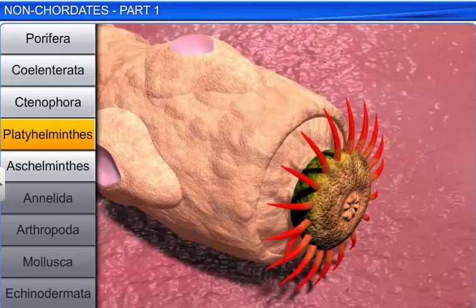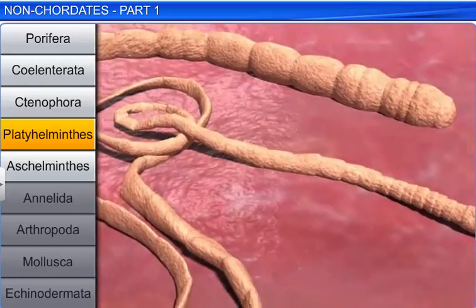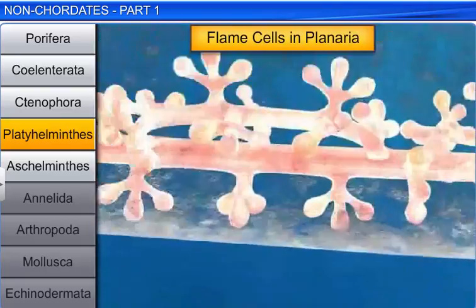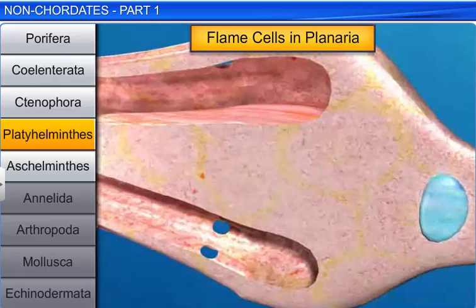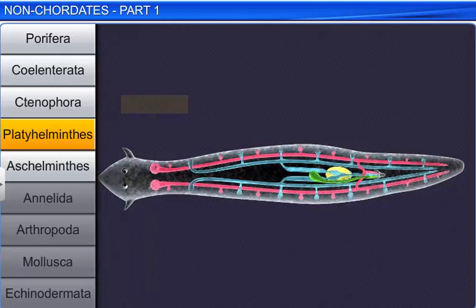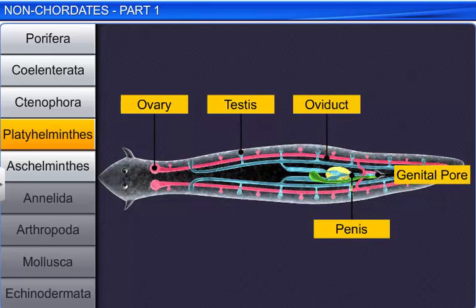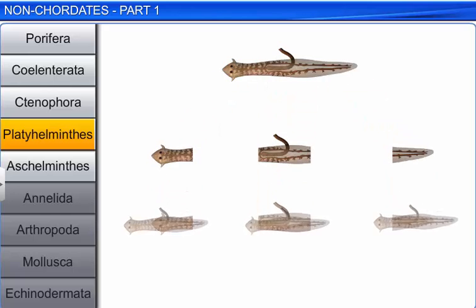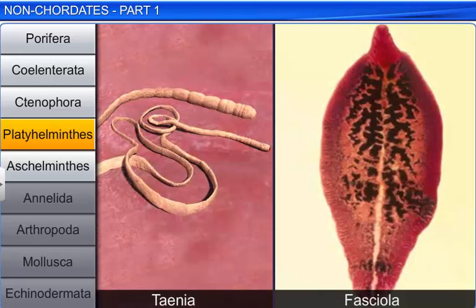The parasitic members possess hooks and suckers, and some of them use the surface of their body to absorb nutrients directly from the host. Flatworms have specialized cells called flame cells, which help in osmoregulation and excretion. The members are hermaphrodite, fertilization is internal, and development is through many larval stages. Some members like Planaria possess high regeneration capacity. Taenia and Fasciola are some common flatworms.